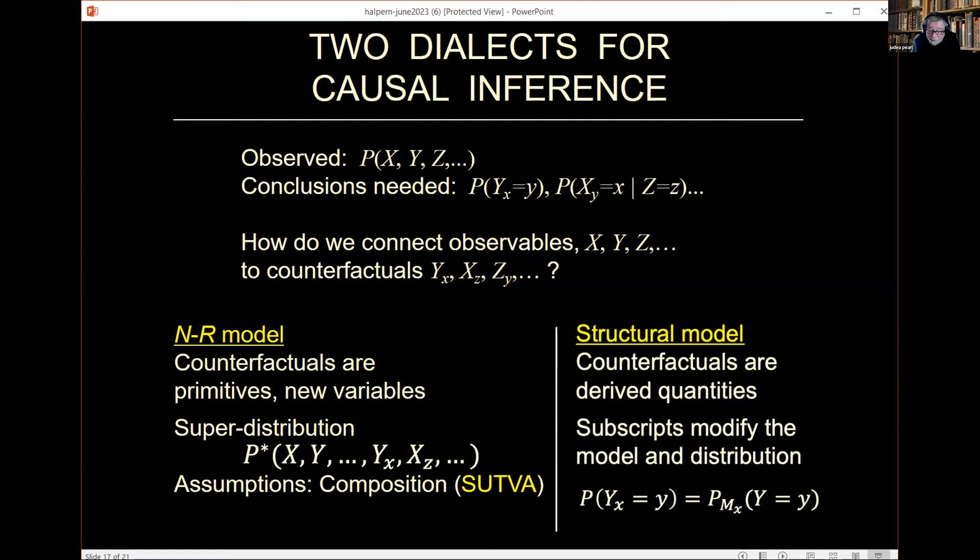Why? Tradition. As my friend Topol said in the movie Fiddler on the Roof: Tradition. The Neiman-Rubin model came into being in 1974. Actually, in 1923, Neiman published his master thesis and he had the notation and some of the semantics for this model. Rubin popularized it and extended it in 1974.